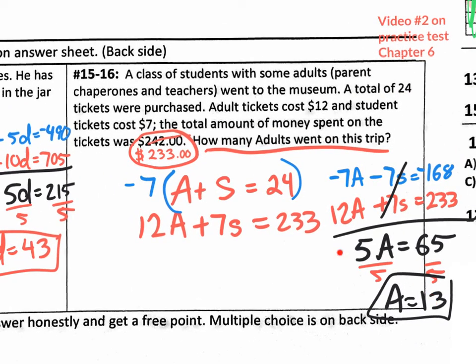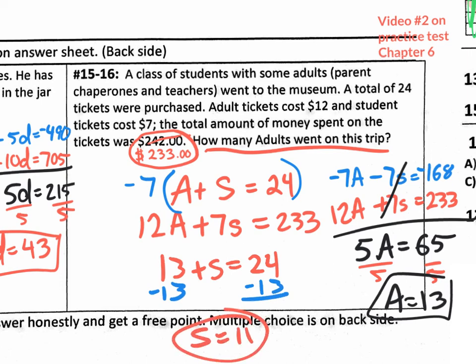That's when you take your 13 adults, plug them back into the original, and say 13 plus S equals 24. So we could find out how many students actually went by subtracting 13 on both sides. And we would get 11. So S equals 11. 11 student tickets. If they asked for students, 11 students went, 13 parents went, or 13 adults went.